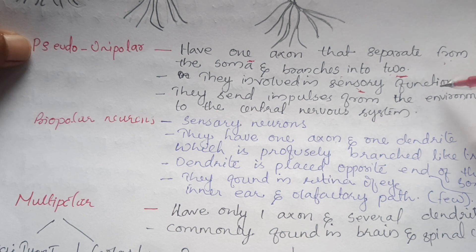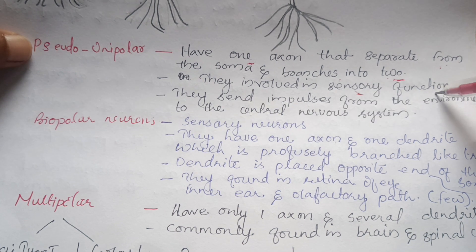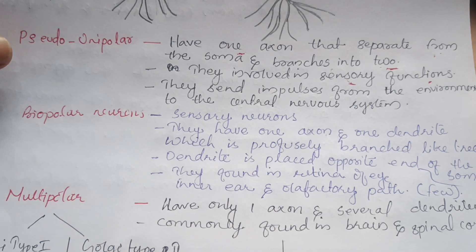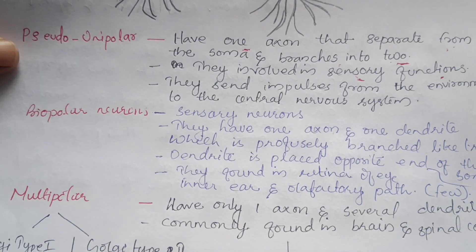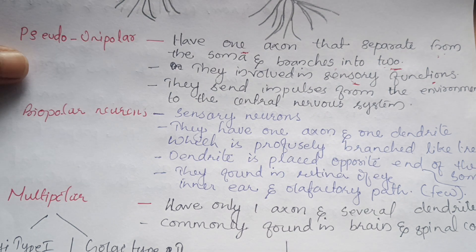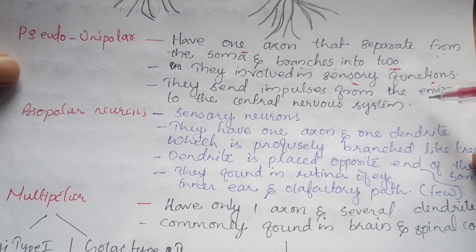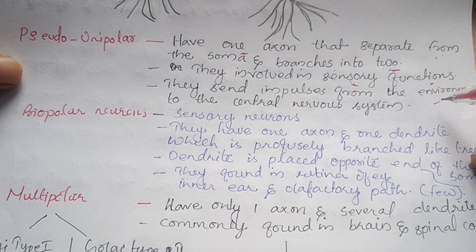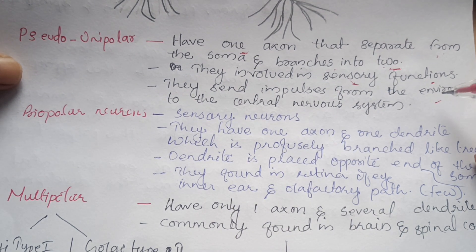These two branches are involved in sensory functions. Sensory functions are a key feature of these neurons, which send impulses from the environment to the central nervous system.